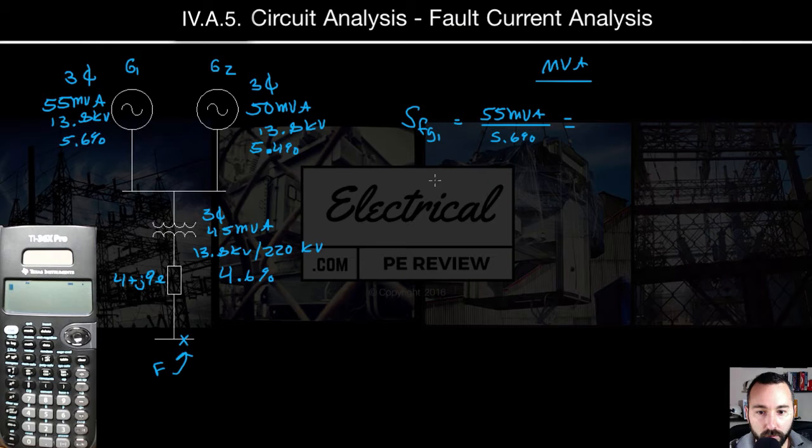Next, for SG2, we have 50 MVA divided by 5.4%. Then moving down the line, we've got a transformer, SFX, we'll call it. That's 45 MVA divided by 4.6%.